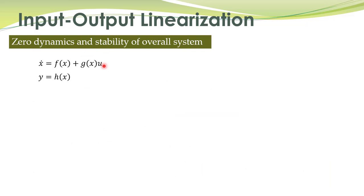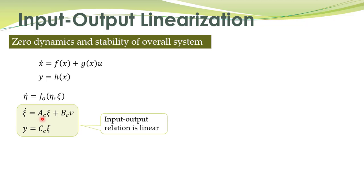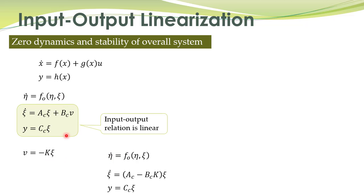We again start with the general system with state equations and output equation. We have the input-output linearized part — this is the linear part — and this other part is called the internal dynamics. For the linear part we can use a state feedback controller, and the system is written accordingly.